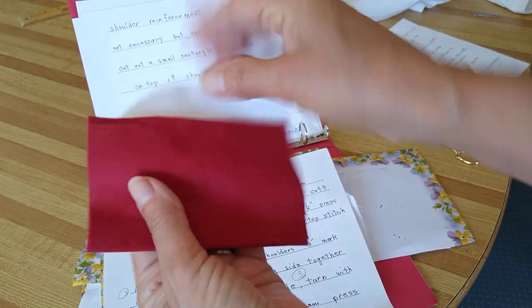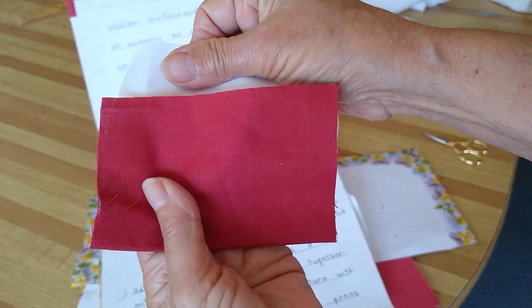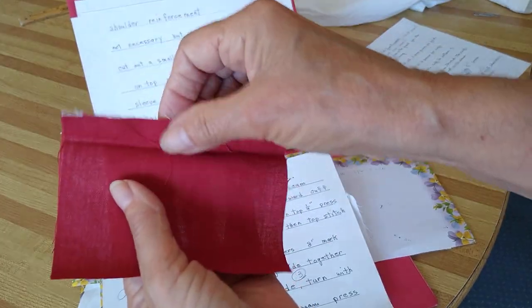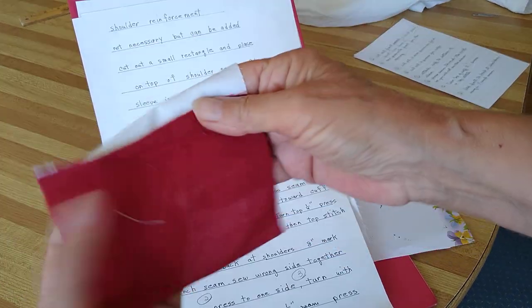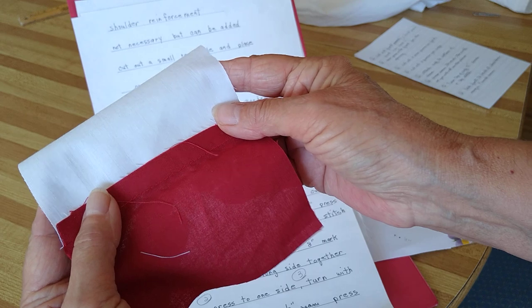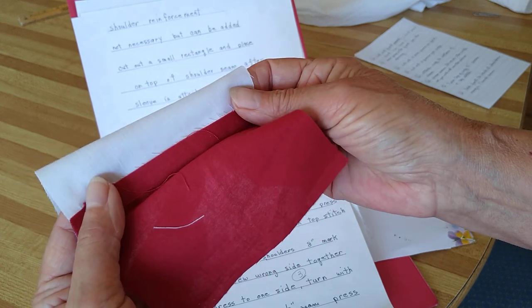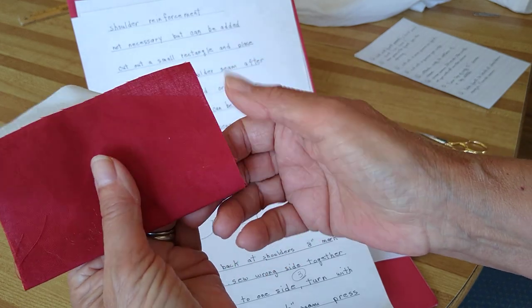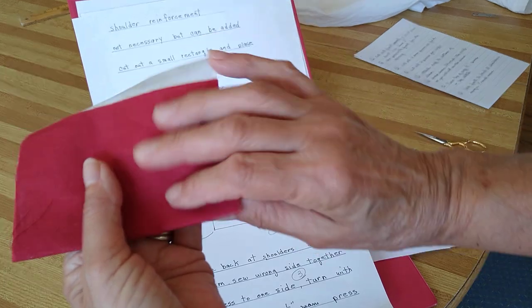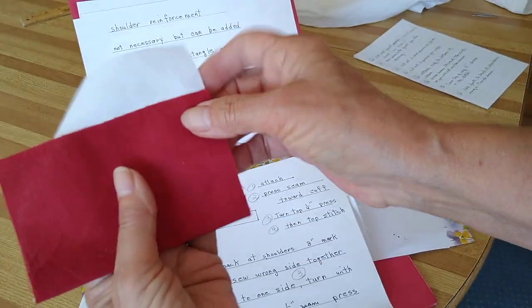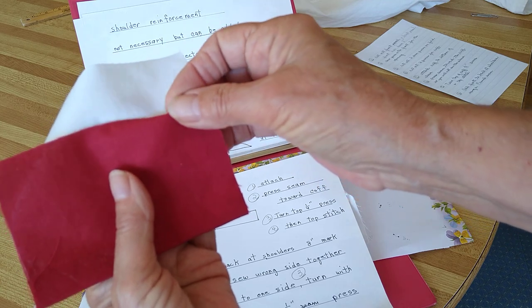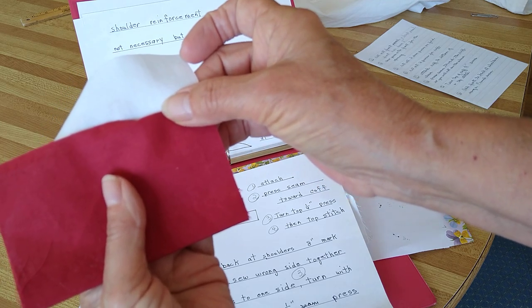Here it is. This will be the cuff, this is the garment. You sew it, you're going to press it toward the body because when you turn it you don't want it to show. See it doesn't show. Then you're going to turn this, top stitch it.